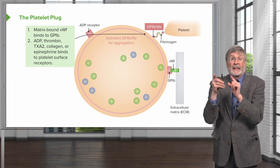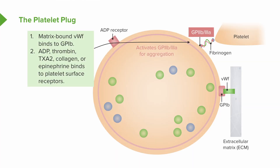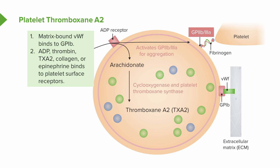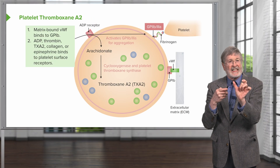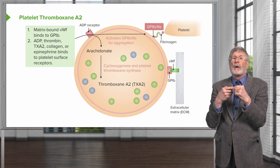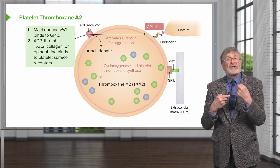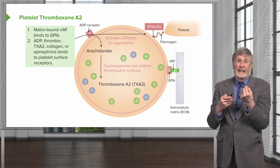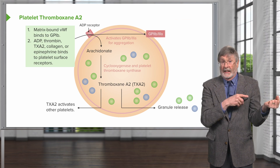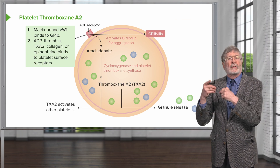The ADP receptor or other molecules — thrombin, thromboxane A2, collagen, etc. — will drive the metabolic pathways within the platelets involving cyclooxygenase and platelet thromboxane synthase to convert arachidonic acid precursors to thromboxane A2, a prostaglandin metabolite that will have secondary effects. That thromboxane A2 will activate other platelets and drive granule release.